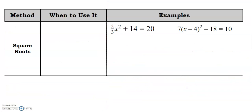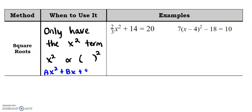The main thing you want to look for is if you only have the x squared term. Okay, so that basically means you've got x squared or you've got some quantity in parentheses squared. If you're the kind of person that understands the a, b, c. So like you're ax squared plus bx plus c. Basically what this means is that you have no bx term. You don't have that term in the middle.